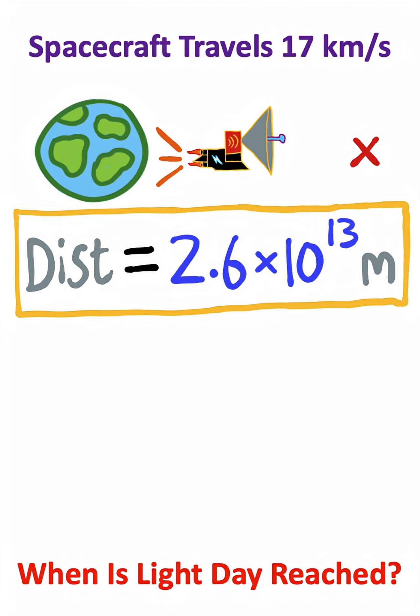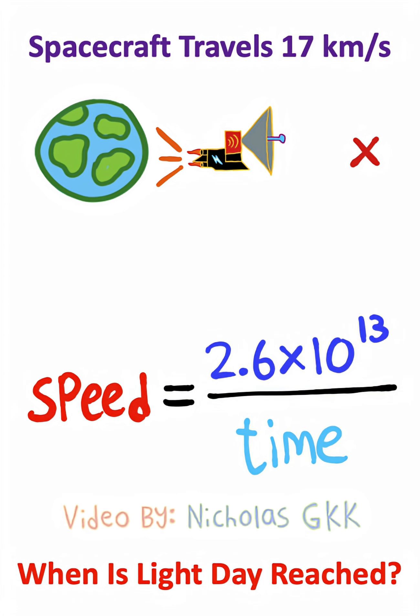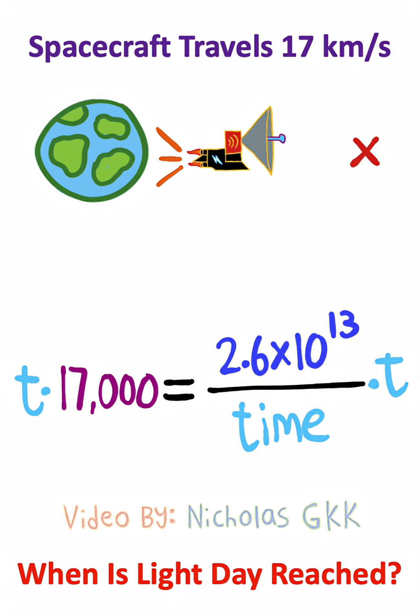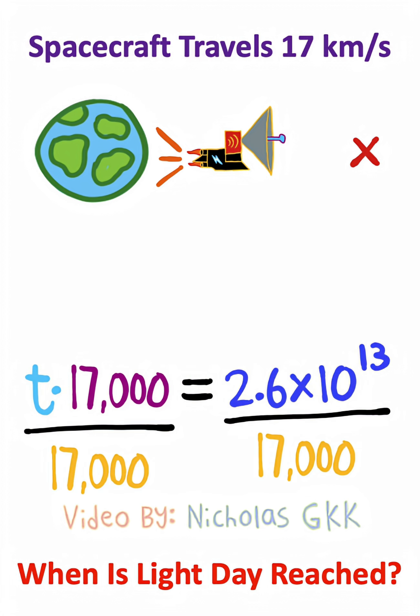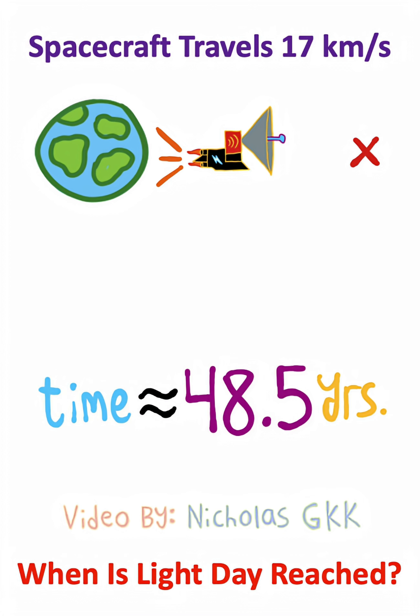Now, basic physics shows us speed is distance over time. We just found the distance and the speed is 17,000 meters per second. So all I need is to use a little algebra to solve for the time, which is equivalent to about 48 and a half years.